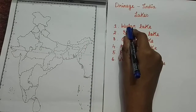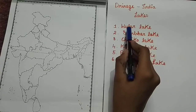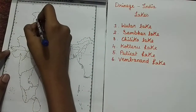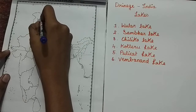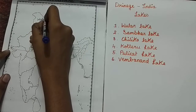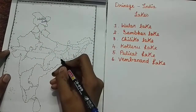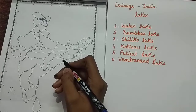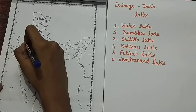First, we want to locate Ullar Lake. Ullar Lake is located in Jammu and Kashmir. Then Sambar Lake — Sambar Lake is located in Rajasthan.